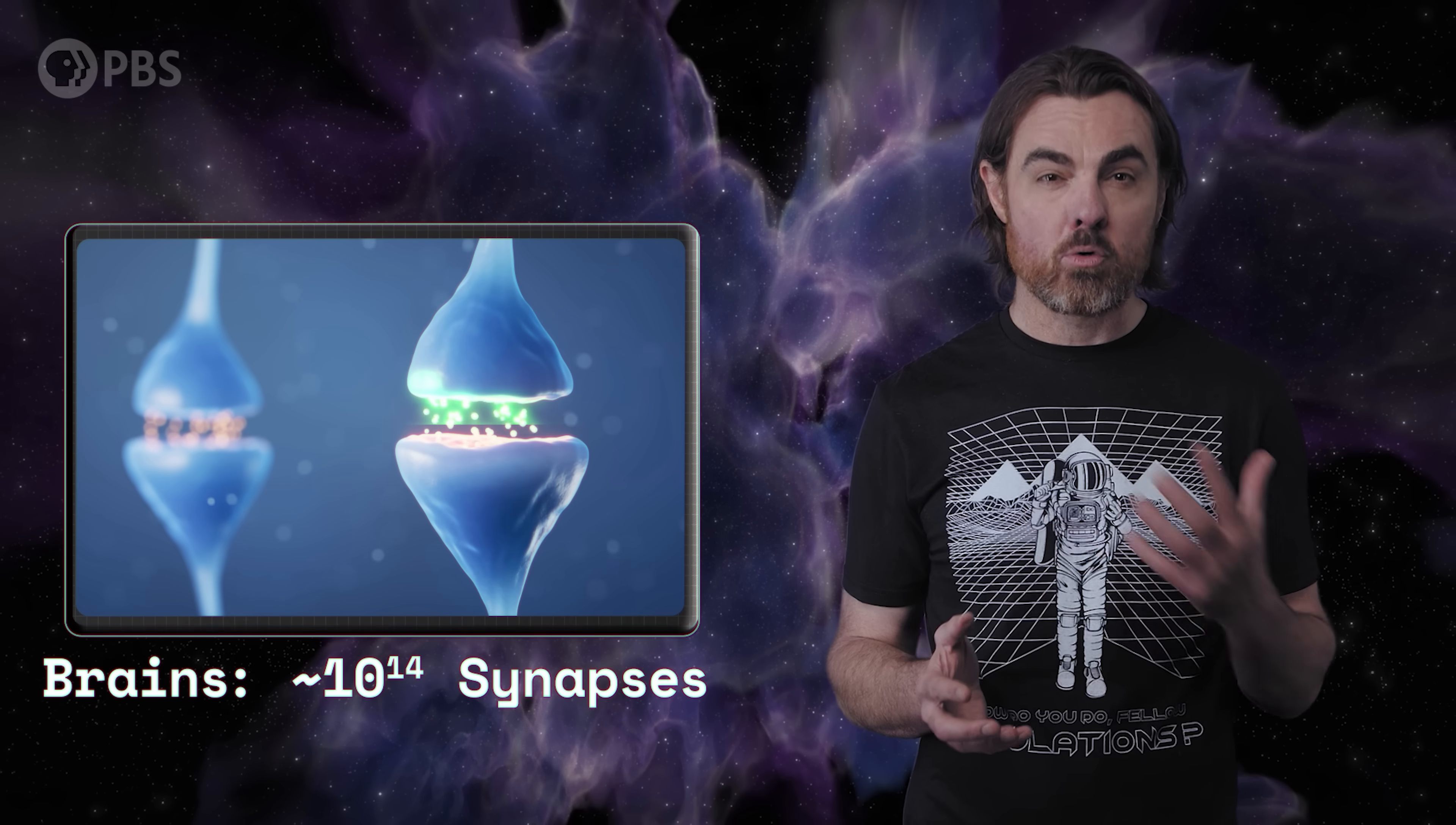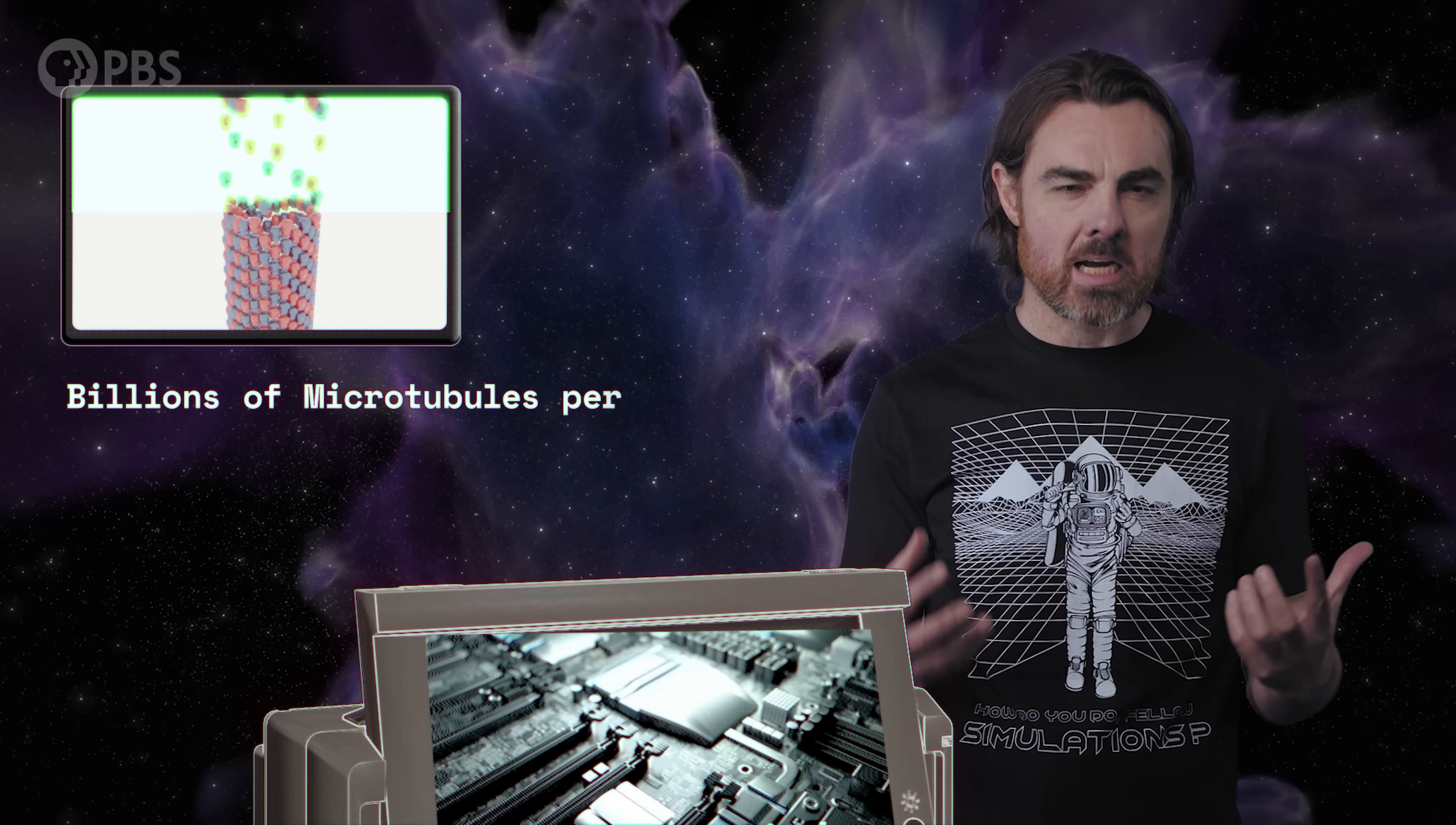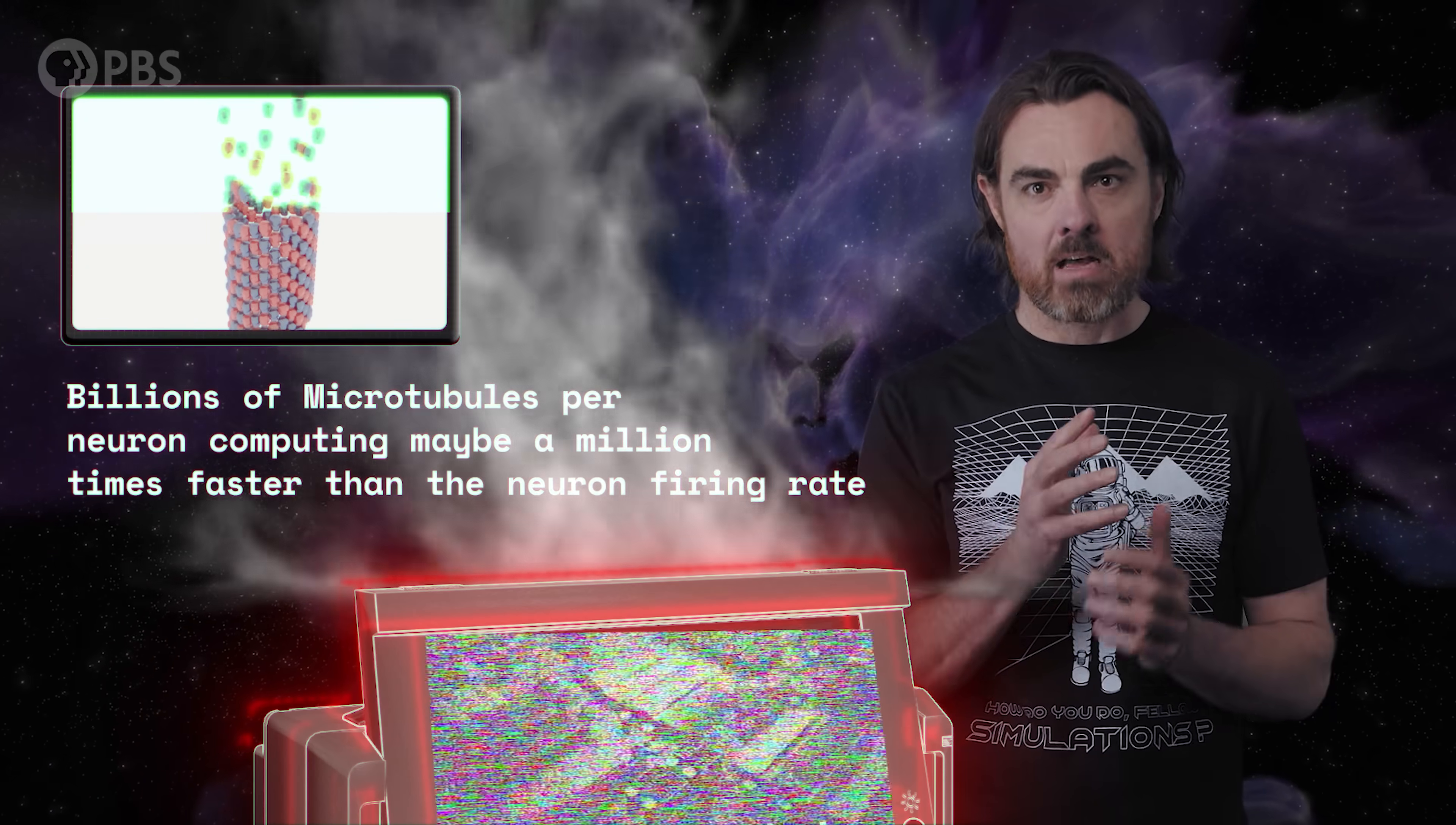So what are the implications of this? Well, forget consciousness. Even if microtubules contribute to cognition, we may be away further from artificial general intelligence than some believe. Brains have around 10 to the power of 14 synapses. AGI optimists have said that we'll be able to simulate human intelligence when we have computers capable of simulating that many connections, which Moore's law tells us will be pretty soon. However, if neurons are also doing internal computation with microtubules, and there are a billion microtubules per neuron computing maybe a million times faster than the neuron firing rate, then we may need to wait quite a bit longer to make our first AGI.